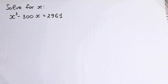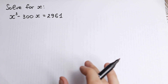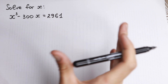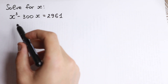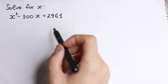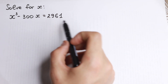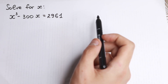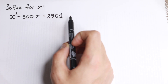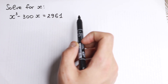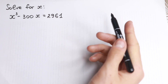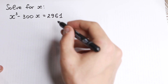Hello everyone! Welcome back to higher mathematics. Really interesting equation today — a really interesting cube equation. We have x cubed minus 300x equal to 2961, and we need to find x. I want to show you a really good trick for how we can solve this cube equation. Take a look.